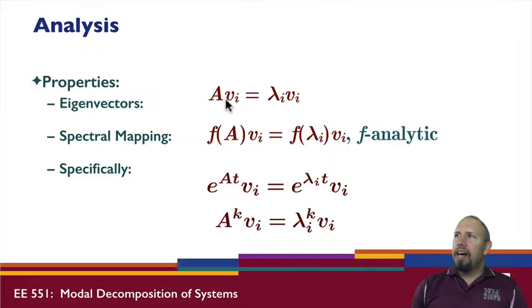Properties. If we have an eigenvector-eigenvalue relationship, Av_i equals lambda_i v_i, the spectral mapping theorem says that if I take a function of A times v_i, I take the function of that eigenvalue times v_i. For any analytic function - a function that can be represented by a Taylor series, or Maclaurin series, or a power series. In particular, for us, e^(At) times v_i equals e^(lambda_i t) times v_i. And A^k times v_i equals lambda_i^k times v_i.